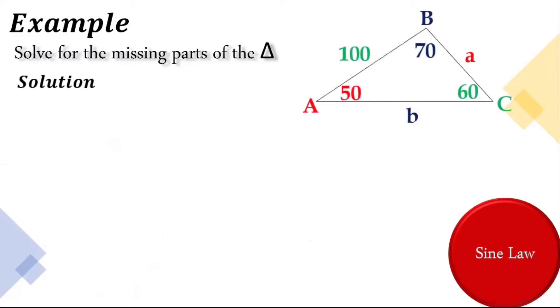Since we already found the value or the measurement of angle B, let's go to side a. So sine A over a is equal to sine C over c. We use sine C over c because sine C is given and side c is also given. So we will change the value of the following. And we have here sine 50 degrees over a is equal to sine 60 degrees over 100.